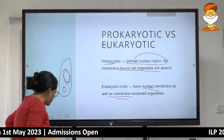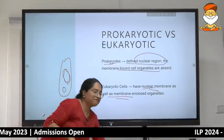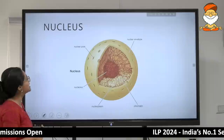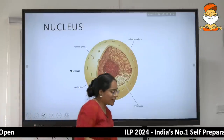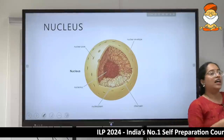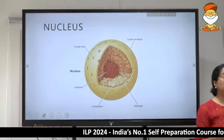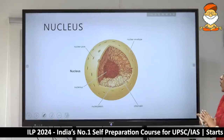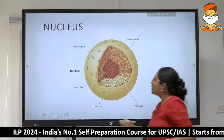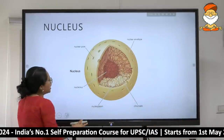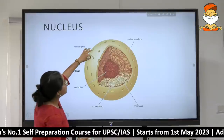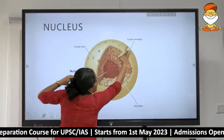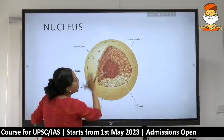It just so happens that a lot of prokaryotes turned out to be single-celled, but that is not the defining feature. The defining feature is the nuclear membrane and membrane-bound organelles. Coming to the core part: the nucleus. In the nucleus you have structures called nuclear pores and an entire covering called the nuclear envelope.